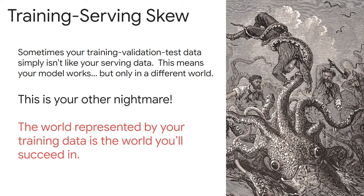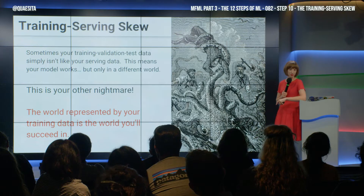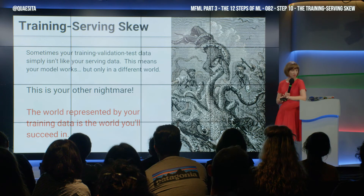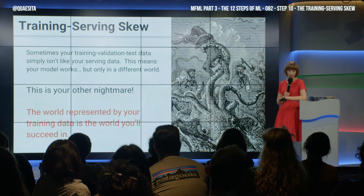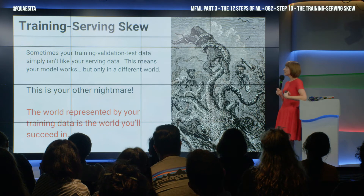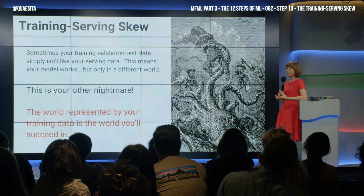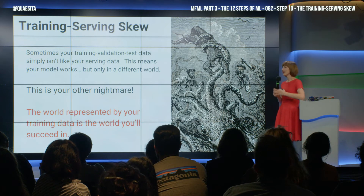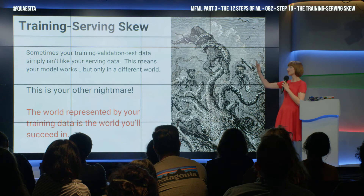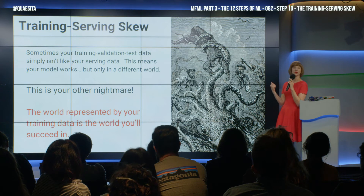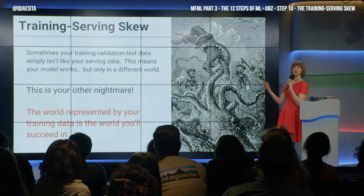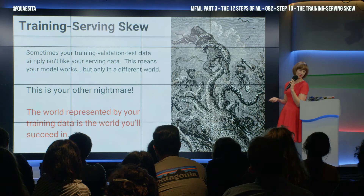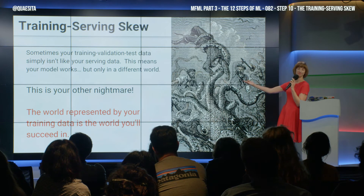This is your other nightmare. The first one was called overfitting. Training-serving skew is the second nightmare. This is where you trained your model to work in some other world, and that just happens not to be the world you actually inhabit. Your model works — just not in this world.